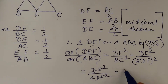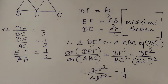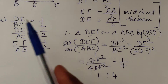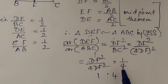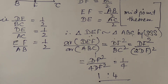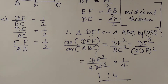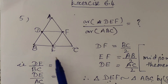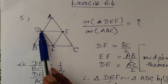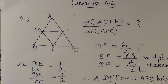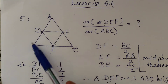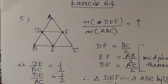We get the answer 1 by 4, so the ratio is 1 is to 4. When midpoints of all three sides of a triangle are joined, the ratio of the area of the inner triangle to the outer triangle is always 1 is to 4.